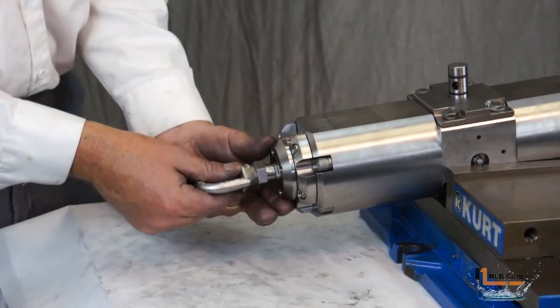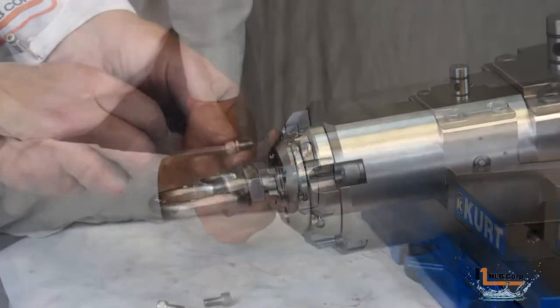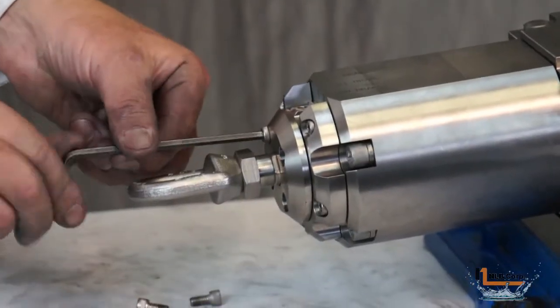To reinstall the swivel, put it into position, align the holes in the swivel with the holes in the end cap, and install the four fasteners.